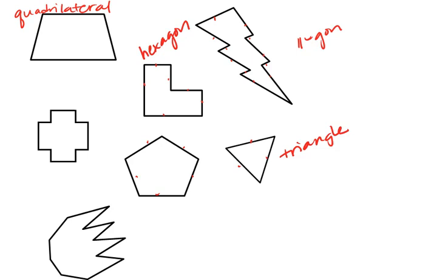This shape has 1, 2, 3, 4, 5 sides, so it's a pentagon. And this one has 1, 2, 3, 4, 5, 6, 7, 8, 9, 10, 11, 12 sides—a dodecagon.